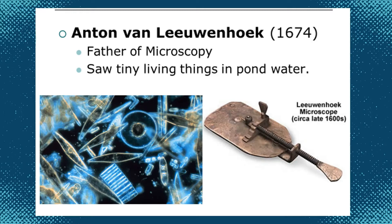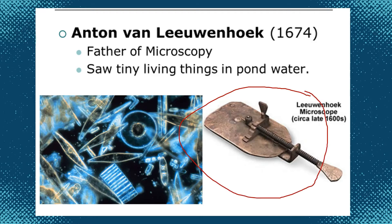Anton van Leeuwenhoek was a Dutch businessman and a contemporary of Robert Hooke. He used his own monocular microscope and was the first person to observe bacteria and protozoa under the microscope. Leeuwenhoek is known to have made over 500 microscopes, of which fewer than 10 have survived to the present day. Leeuwenhoek's skill at grinding lenses, together with his naturally accurate eyesight and great care in adjusting lighting, enabled him to build microscopes that magnified over 200 times with clearer and brighter images than any of his colleagues. This is why he was given the name Father of Microscopy.